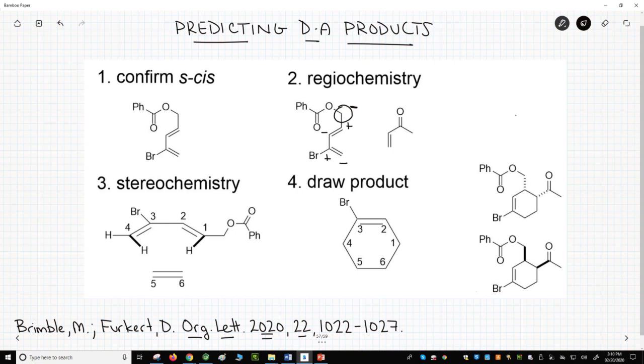Next, find the strongest dienophile electron-withdrawing group. It's the carbonyl carbon. Give it an imaginary plus charge and alternate charges through the dienophile carbons. Finally, line up a plus end to a minus end and a minus end to a plus. That's our regiochemistry.